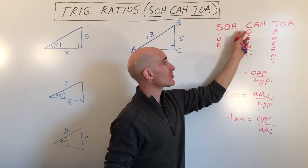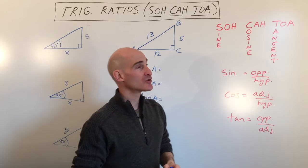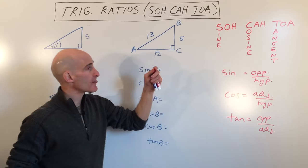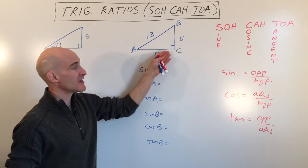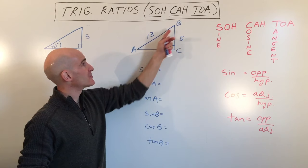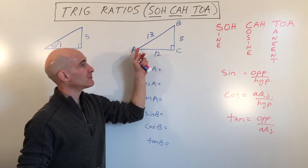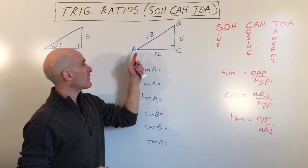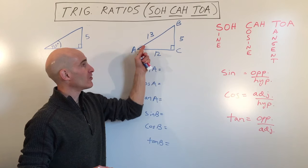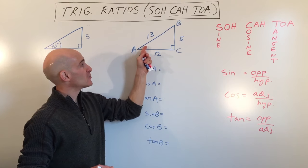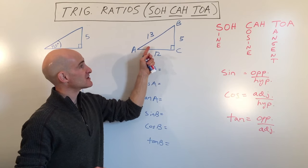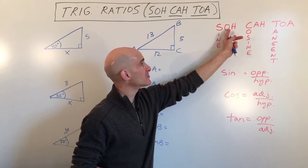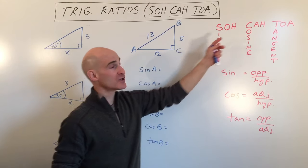These are called trigonometric ratios, and they apply to right triangles. For example, in right triangle ABC, if we want to find the sine of angle A, that means it's the opposite side over the hypotenuse.